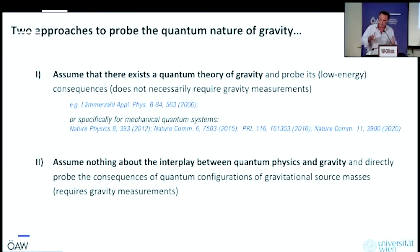Number one is the approach to assume there exists a quantum theory of gravity. There are many different ways of doing it, for example, applying regular quantum field theory to the radiation field. And we now probe the low energy consequences of such a quantum theory of gravity, which means we do an experiment in the lab and look at the consequences that these theories predict for lab-scale experiments. That typically does not require any gravity measurements, because those consequences are typically on the dynamical side.